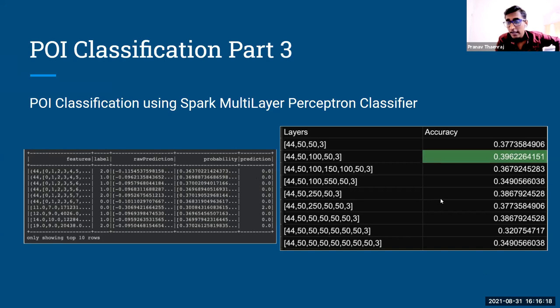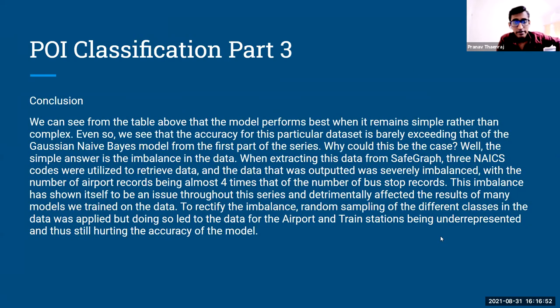So we went ahead and applied this. And unfortunately, the results were not as exciting as we expected it to be. We were expecting much higher numbers than traditional machine learning algorithms. But unfortunately, the highest accuracy that we were able to pull through was about 39%. So this did give us a lot of insights as to how to use this particular classifier with this data. But at the end of the day, it was a little bit underwhelming. So again, this can again be attributed most likely to the way in which the data was imbalanced.